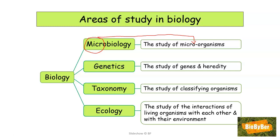Genetics, another big section in the course, is the study of your genes and how you inherit characteristics from your parents — it is the study of genes and heredity. As you can see in the term, you can see the word 'gene.' Taxonomy is the study of classifying organisms, and later in the course we shall be learning about how scientists classify living organisms or put them into different groups or kingdoms based on their similarities.